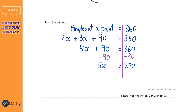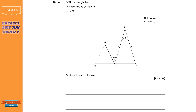Next step, we're going to get rid of that 5 from the 5x. It's a times 5, so the opposite is divided by 5 — we've got to apply that to both sides. We cancel the 5 out from the left hand side and are left with x, and on the right hand side we do 270 divided by 5 which is 54.